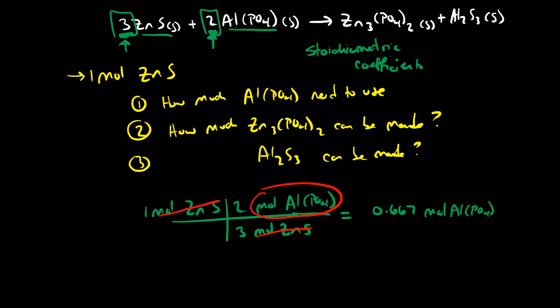Moles are central in this conversion. We can use these coefficients — three and two, or over here it's actually one; if nothing is written, it's one aluminum sulfide — as conversion factors to go between moles of a reactant and moles of anything else in that chemical reaction.